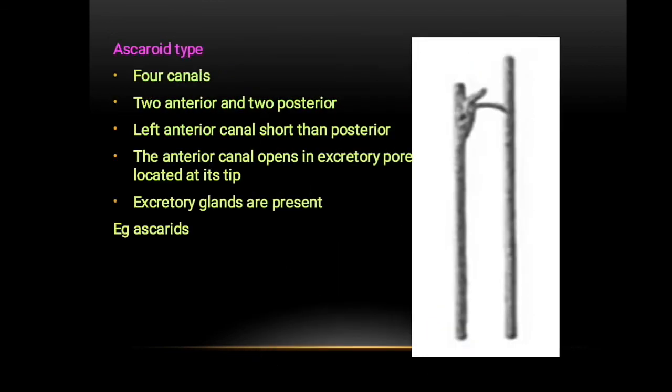Next is the ascaroid type. It has all four excretory canals. The left anterior canal is shorter than the posterior one. The excretory cell and duct are both present. Example: Ascaris.